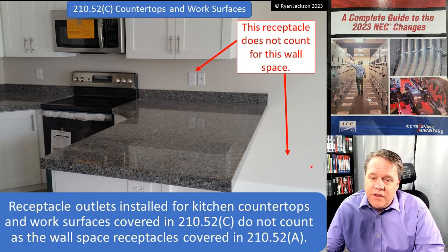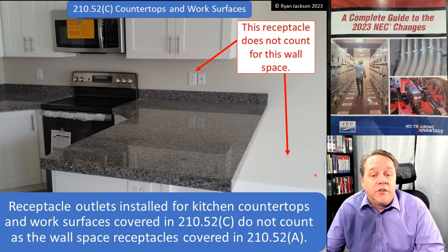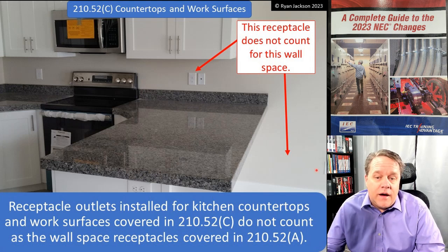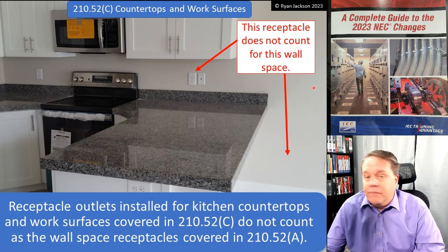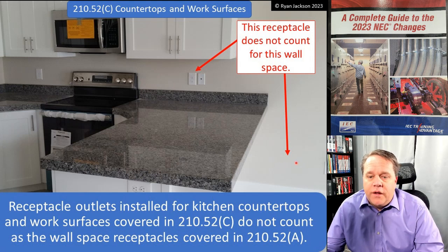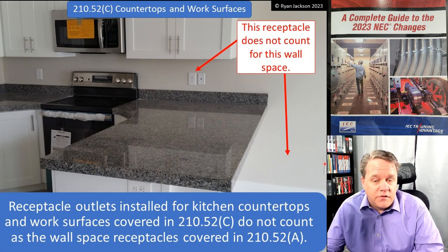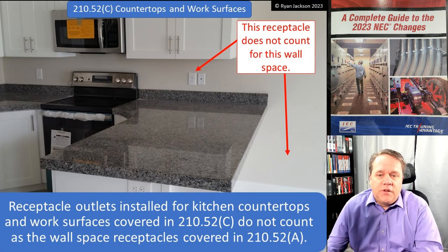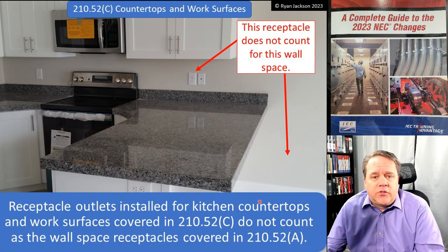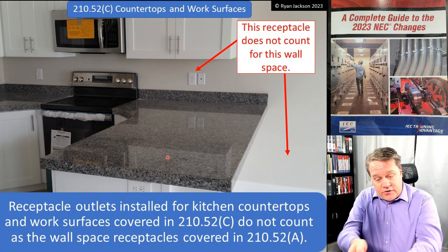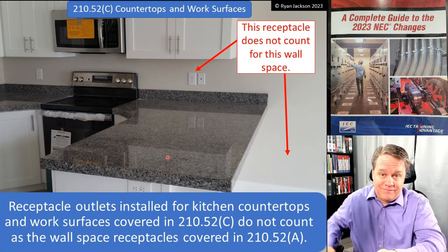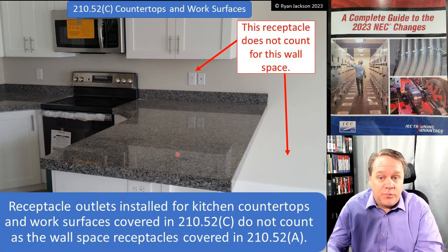Countertop receptacles do not replace wall-space receptacles. In this dining room photo, there is a wall-space receptacle at the edge — without it, you could not substitute the countertop receptacle to satisfy the wall-space layout. The reason for this rule is largely due to peninsula receptacles: a receptacle at the peninsula facing outward should not count as the wall-space receptacle behind the person standing at it. That's why these two types do not intermix.